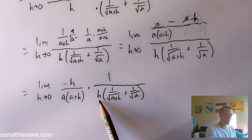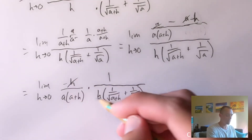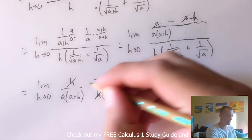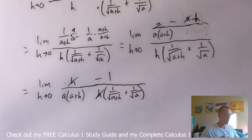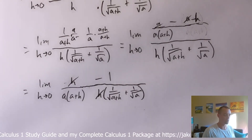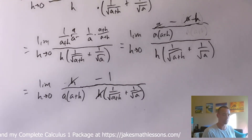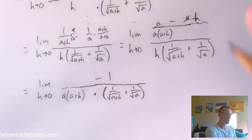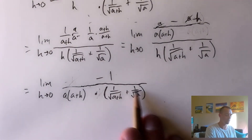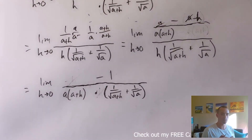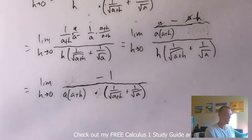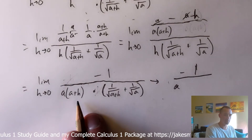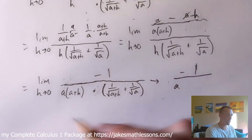Dividing by something is the same as multiplying by its reciprocal, so instead of this fraction divided by all of the denominator, we can do this fraction times one over all of that. Now look what happens — the h in the numerator cancels with the h in the denominator. So now we just have negative one on the numerator and all the remaining terms on the denominator. The goal was to get into a position where we could plug in zero for h without dividing by zero, and now we're there.